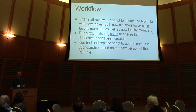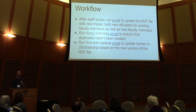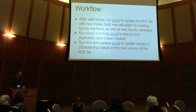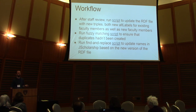After the staff review was completed, we ran a script to update the RDF file with new triples — both new altLabels that had come into the system and new faculty members that hadn't appeared in the system at all. We ran a second fuzzy matching script just to make sure no accidental duplicates had been created. Once we were satisfied with those results, we ran a find-and-replace script that went through DSpace, found any name that was an altLabel, and replaced it with the correct prefLabel associated with that particular faculty member.